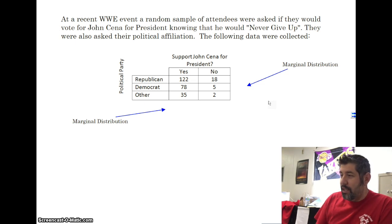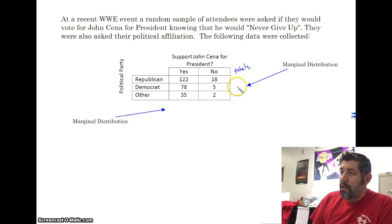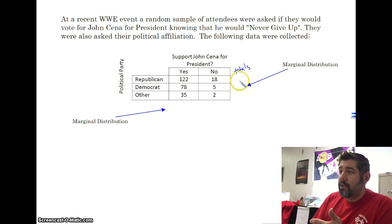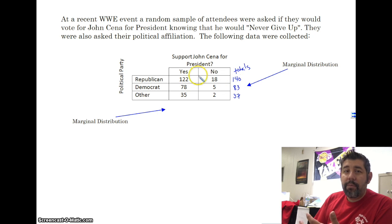I need to write in the totals here — the totals are my marginal distributions of this variable. If I add these up, I get 140, 83, and 37. These numbers are my marginal distribution of political party: 140 people were Republican, 83 were Democrat, and 37 were Other.